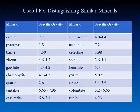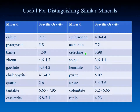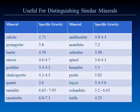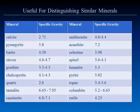Other minerals easily distinguished using specific gravity: smithsonite has a specific gravity much higher than calcite, yet they look alike. We already mentioned barite and celestine. Goethite and hematite frequently look alike but have very different specific gravities. Chalcopyrite and pyrite; field collectors know topaz is noticeably heftier than quartz; columbite and tantalite. It's a very useful tool for narrowing down the possibilities of what mineral species you're trying to identify.